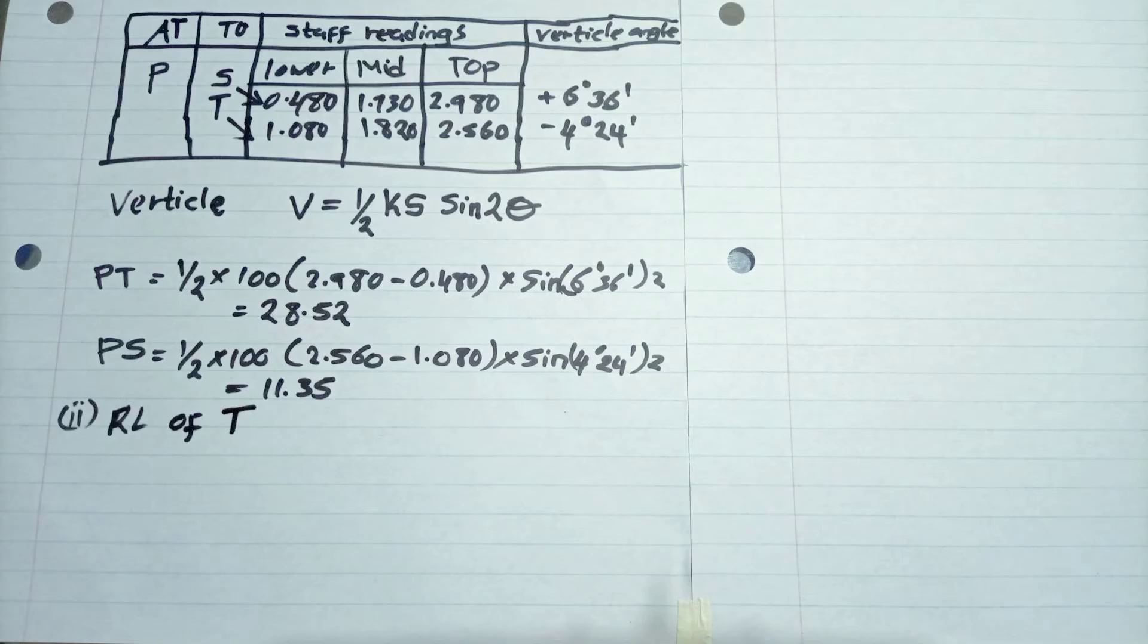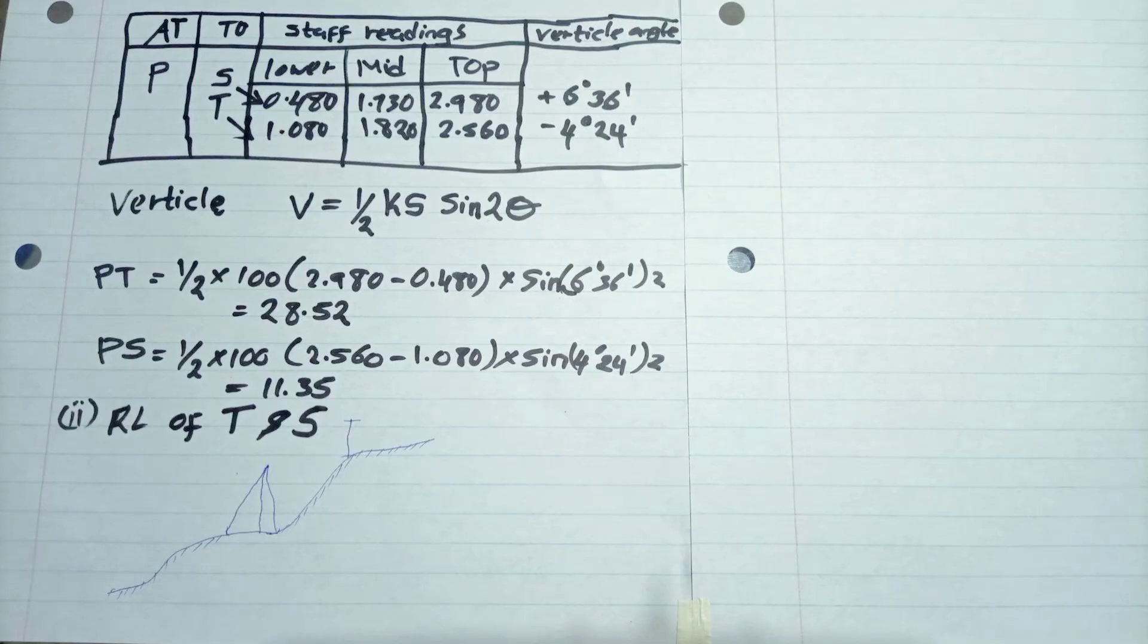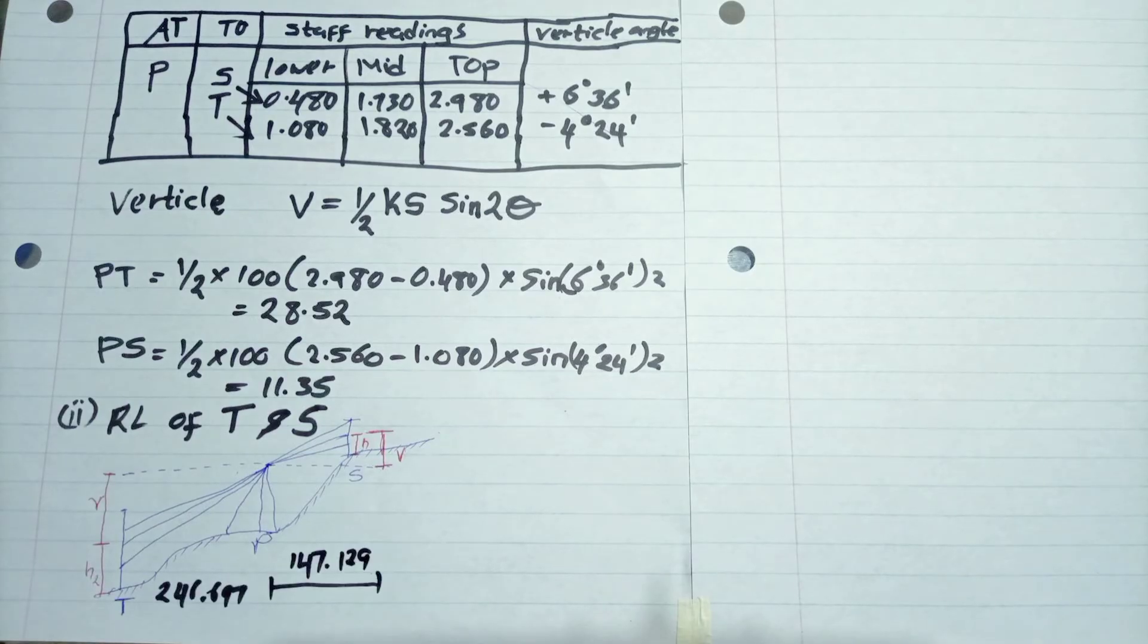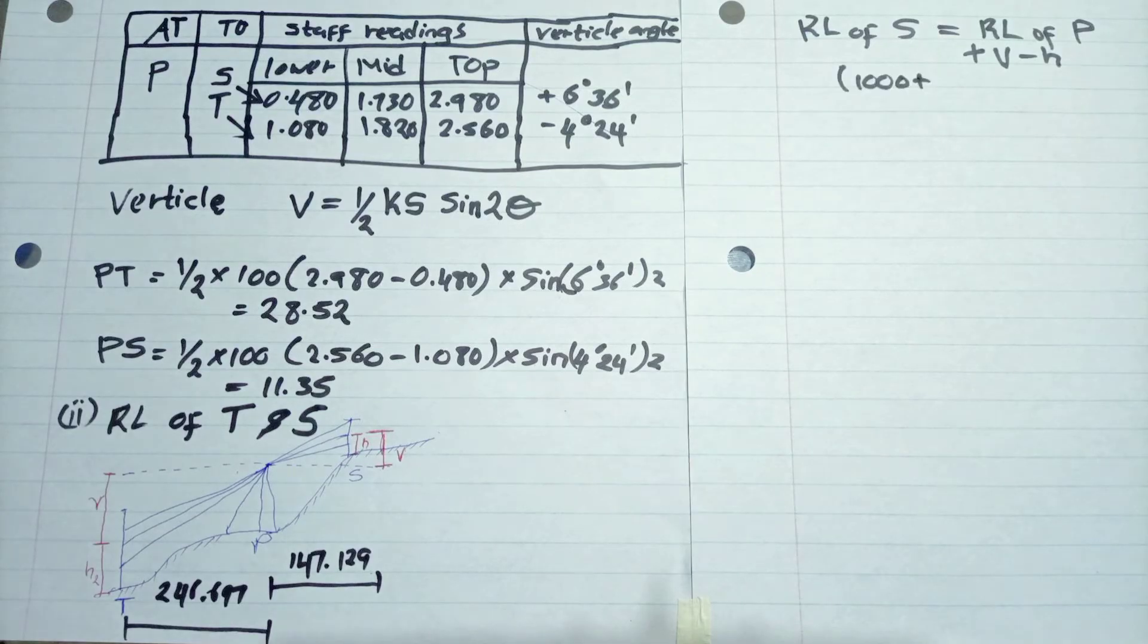From there, we go and calculate our reduced levels of T and S from our diagram. So the instrument was placed at the negative values, that means the instrument faced down. And the positive value, the instrument faced up. So we have V, the vertical, and H, which is the distances.